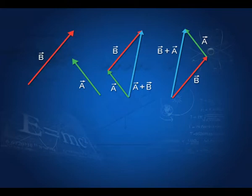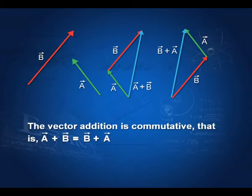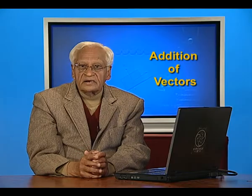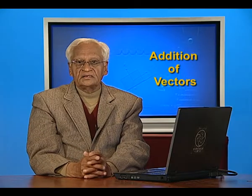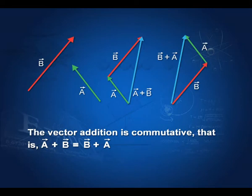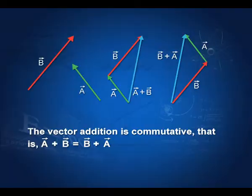You can add B to A and show that vector A plus B equals vector B plus A. That means vector addition is commutative — the order does not matter. Whether you add A to B or B to A, the result is the same.